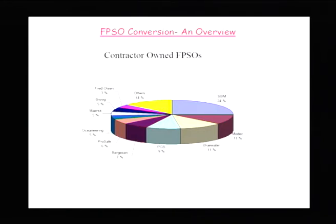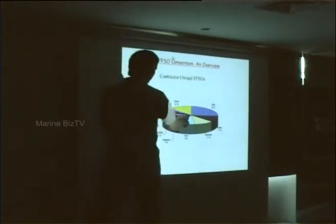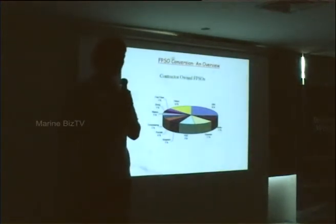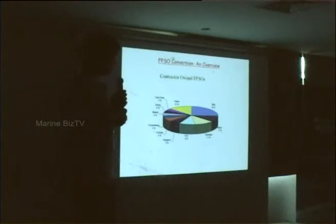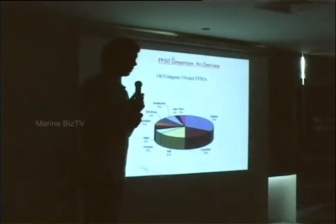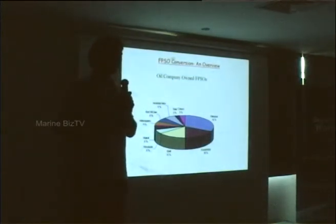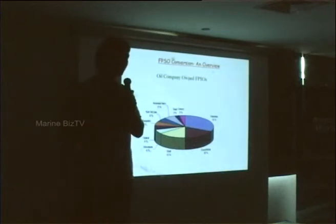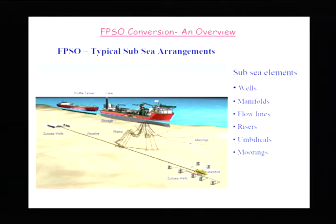This slide shows how worldwide FPSOs are broken down between contractors. SBM owns about 24% of the total number of FPSOs worldwide. MODEC has 11%, Bluewater 11%, PGS 9%, and others follow. Fred Olsen — also a client of ours — has 3%. A similar breakdown by oil company shows Petrobras as the leader with 31%, and that is likely to continue given their major discoveries in recent years. ExxonMobil is next, followed by Shell, Woodside, and Statoil.